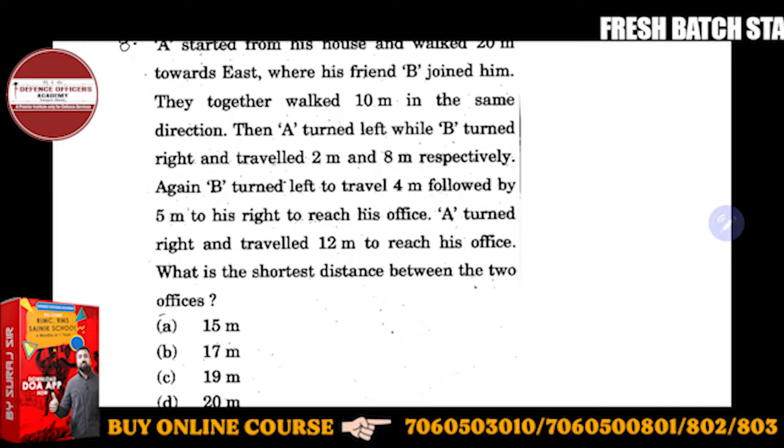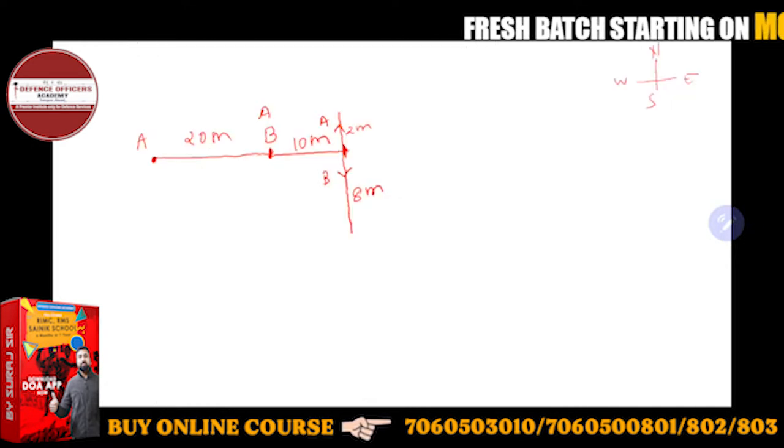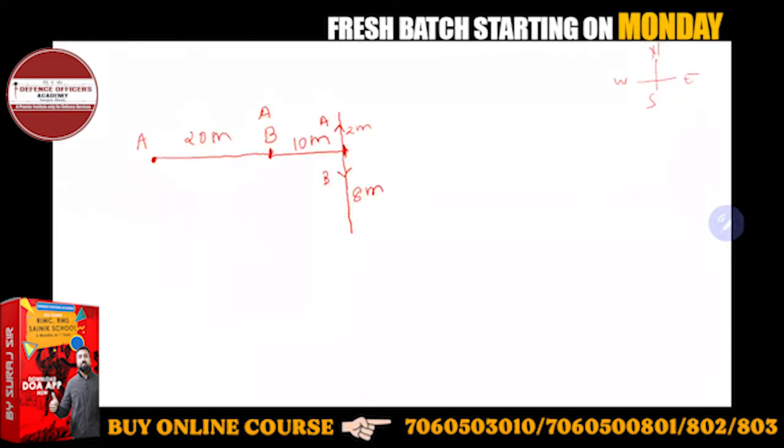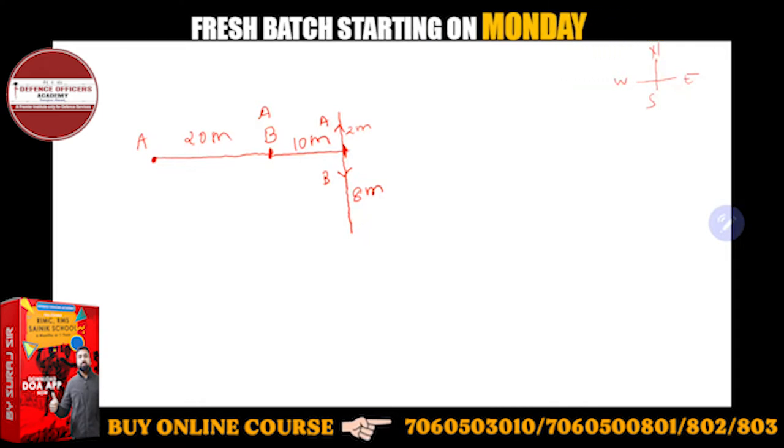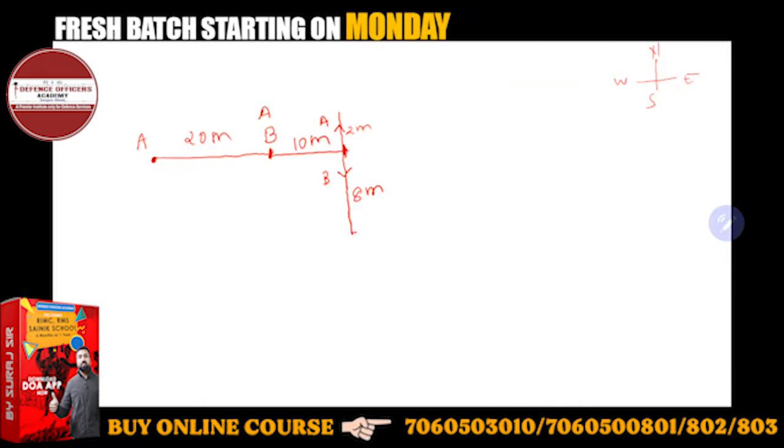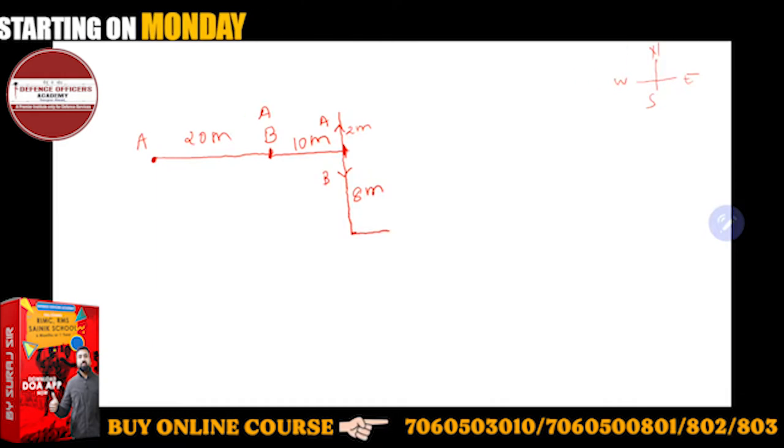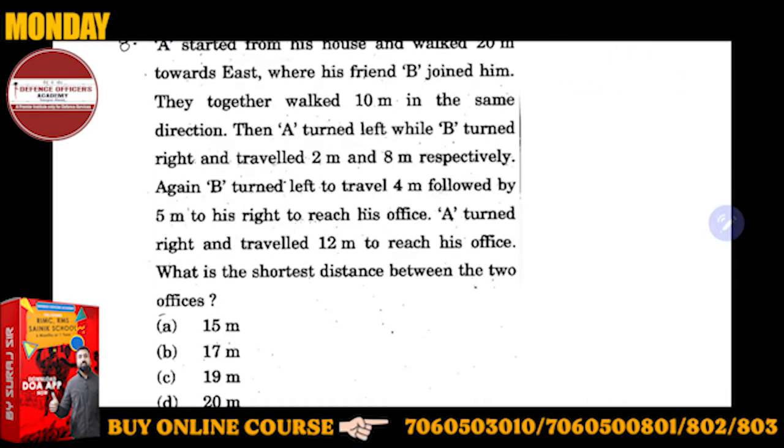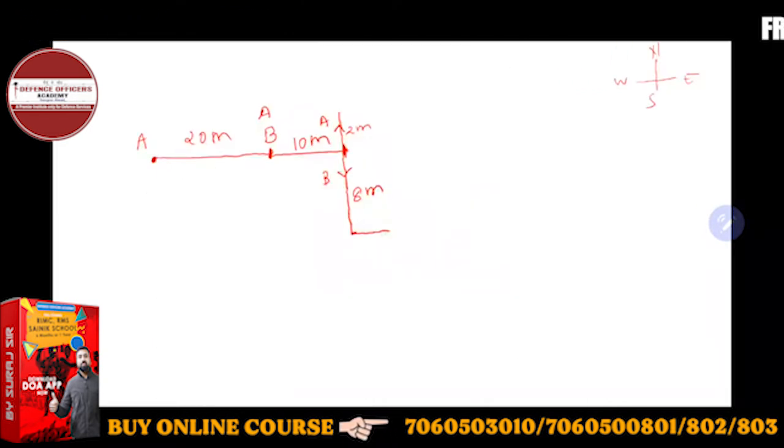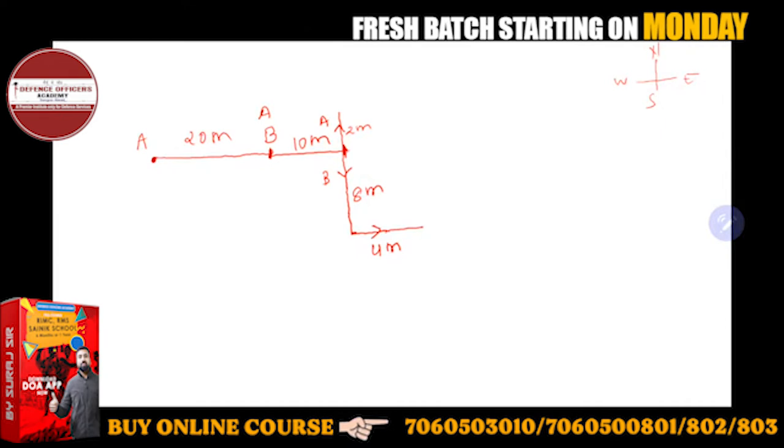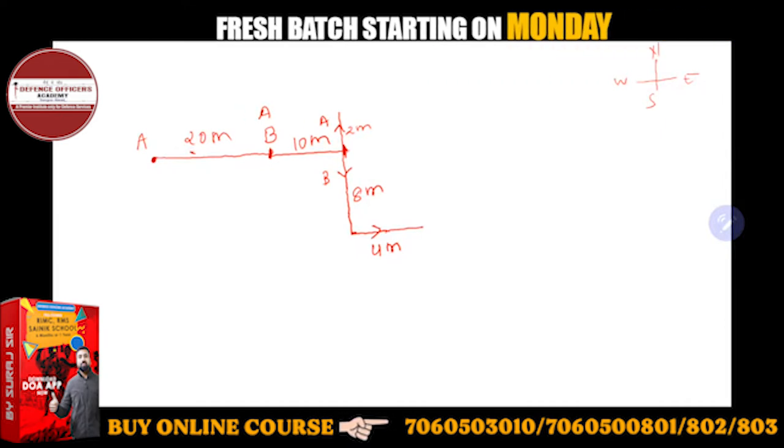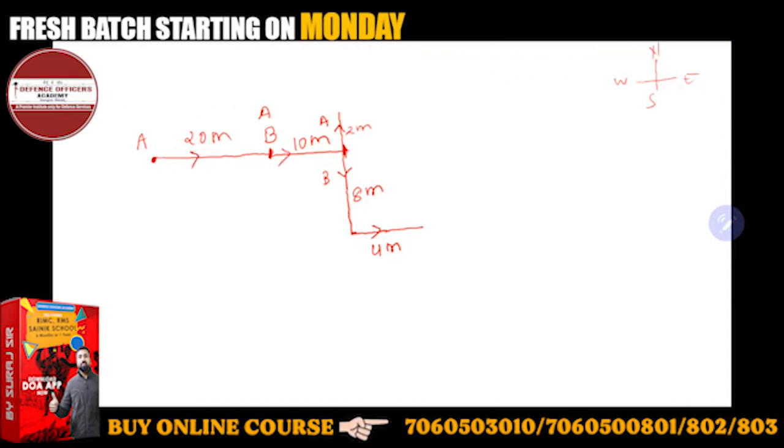Then again B turned left to travel 4 meters. B turned left again, you have to consider yourself on the board. It looks like right but B left here. So B turned left to travel 4 meters, suppose 4 meters. I am showing direction with arrow.